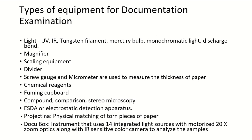A micrometer is used to measure the thickness of paper. Other tools include chemical reagents, a fuming cupboard, compound or stereo comparison microscopes, ESDA (Electrostatic Detection Apparatus), and a Projectina for physical matching of torn pieces of paper. DocuBox is an instrument that uses 14 integrated light sources with motorized 20x zoom optics, allowing the document to be zoomed along with an IR-sensitive color camera.